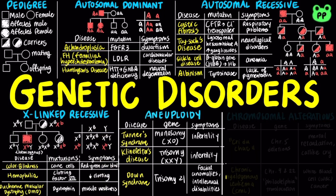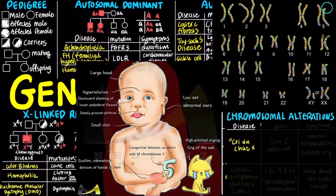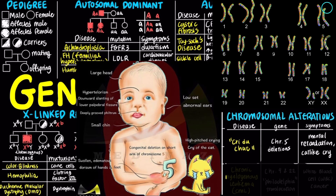Lastly, many genetic disorders are caused by chromosomal alterations. The syndrome cri-du-chat, which means cry of the cat, results from a specific deletion in chromosome 5. A child born with this syndrome is mentally retarded and has a cat-like cry. Individuals usually die in infancy or early childhood.